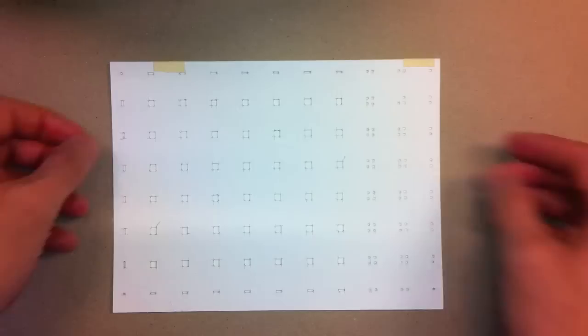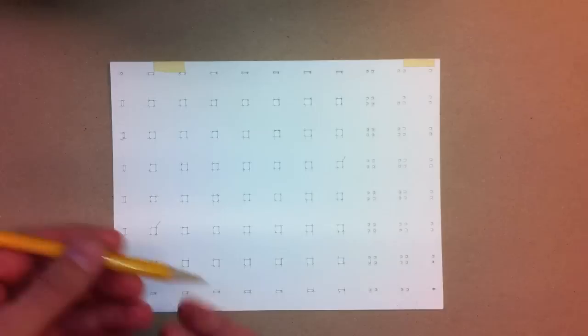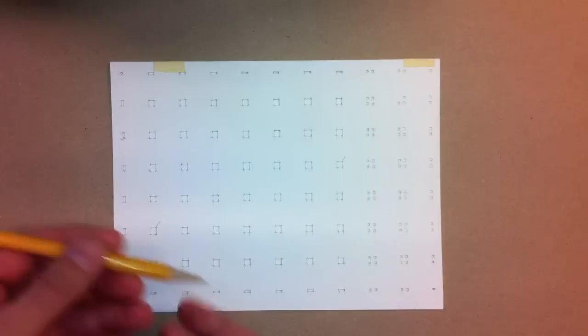Next you're going to use a really sharp pencil to mark each dot. A mechanical pencil is ideal because it provides you with a consistent point. Take your pencil, hold it perpendicular to the paper and give it a little twist to get a clean mark. I'm only going to do a few so you get the idea.